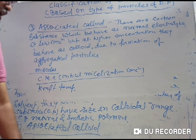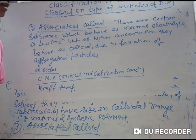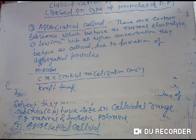So these are the three types of colloids on the basis of the nature of the particles of dispersed phase. I think it is clear. Thank you.